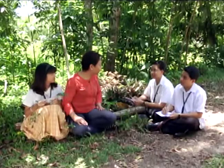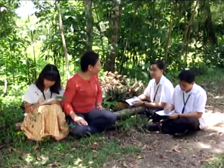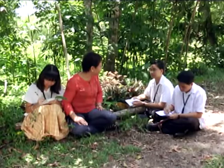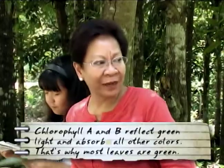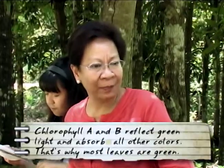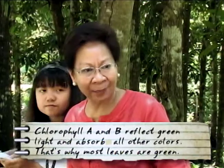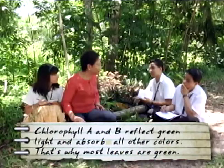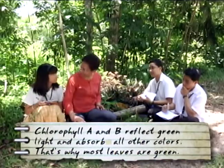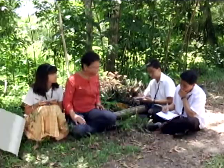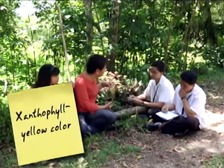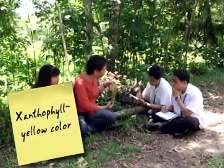Plants possess different pigments, and these pigments absorb light. The most abundant pigments in plants are chlorophylls A and B. Chlorophyll A and chlorophyll B reflect green light but absorb all other colors — that's why most of the leaves are green.